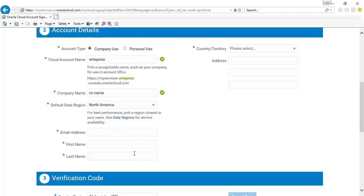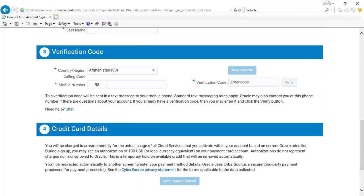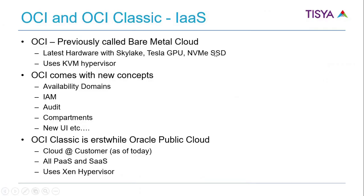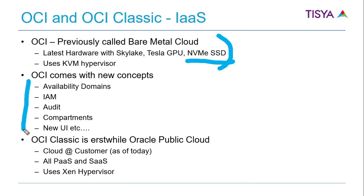OCI, previously called bare metal, comes with the latest hardware, uses the KVM hypervisor, and comes with NVMe storage. It comes with a bunch of new concepts: availability domains, IAM, audit, compartments, etc. OCI Classic is the original Oracle public cloud — all PaaS and SaaS services are available there, and it typically uses an Xen-based hypervisor, specifically something called Nimula.